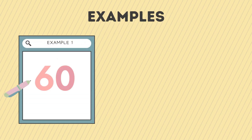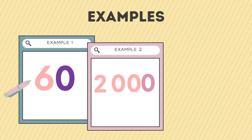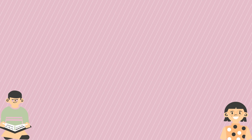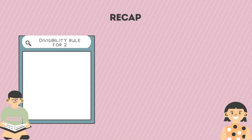Another set of examples: 60, 2,000, and 800 are ending with zeroes — therefore these numbers are divisible by ten. Now let's have a recap. The divisibility rule for two: a number is divisible by two if it is an even number.